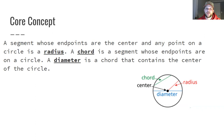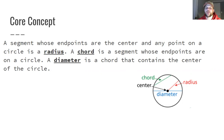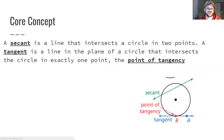A chord is a segment whose endpoints are both on the circle, shown as the green line segment in the diagram. A diameter is a type of chord that draws from one endpoint to the other but must travel through the center, shown as the blue line segment in the diagram. Those are three different types of lines you can draw inside a circle.